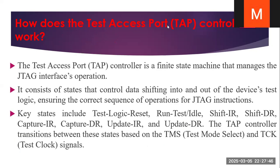How does the Test Access Port (TAP) controller work? The TAP controller is a 16-state finite state machine that manages the JTAG interface operations. It consists of states that control the data shifting into or out of the devices, ensuring the correct sequence of operations for JTAG instructions. Some key states are: Test Logic Reset (the first starting state), Run-Idle, Shift-IR, Shift-DR, Capture-IR, Capture-DR, Update-IR, and Update-DR. All state transitions are controlled by the TMS value and TCK clock signal.